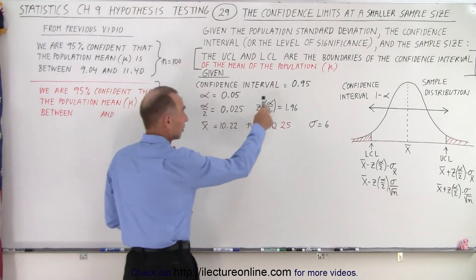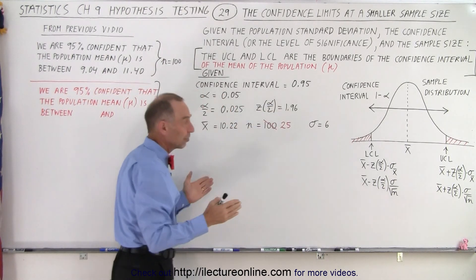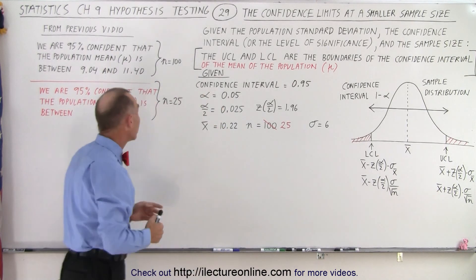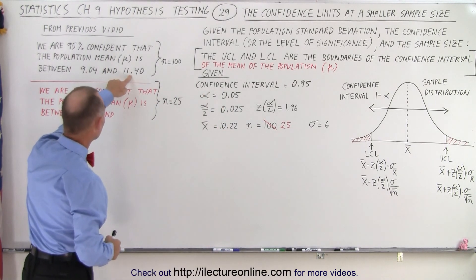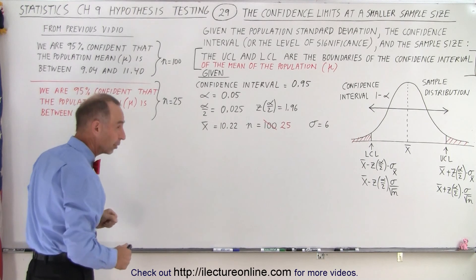When we started at a confidence interval of 0.95, we saw that we had upper and lower confidence limits equal to 11.40 on the upper side and 9.04 on the lower side.